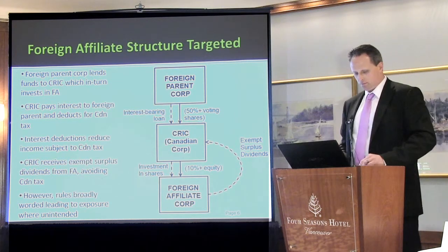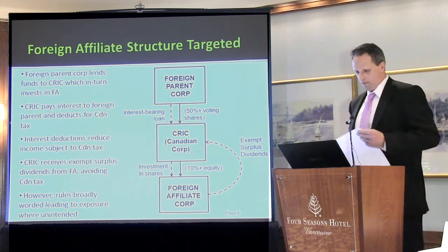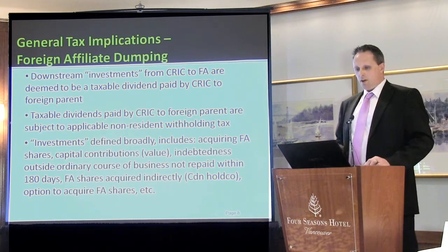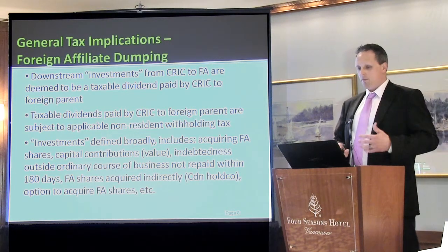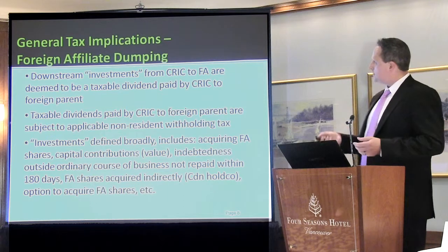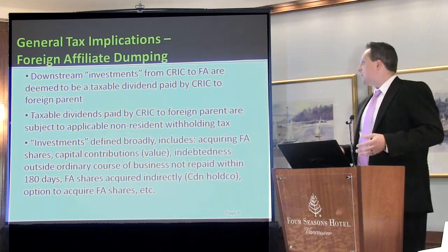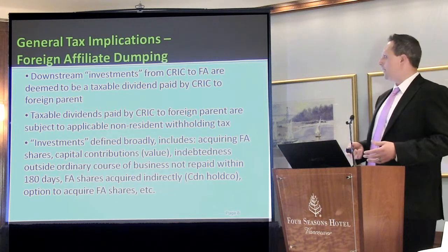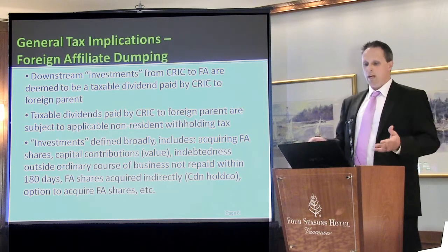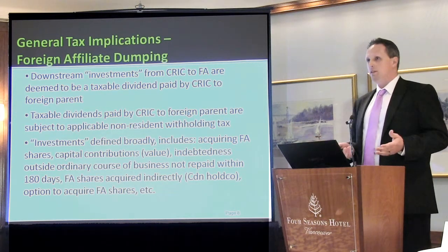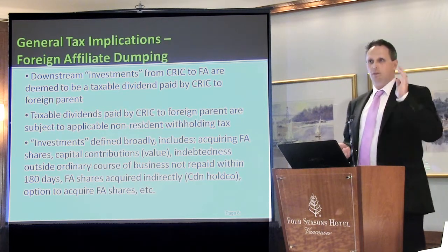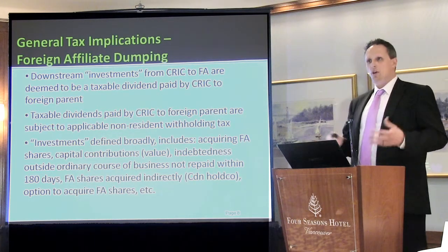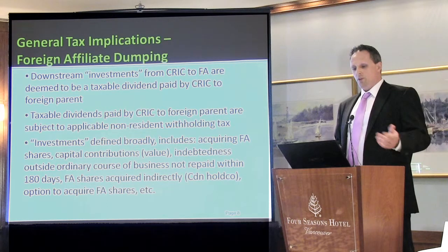Over time, there really isn't any tax being paid in Canada, yet money is still passing up to the foreign parent. That's where Finance had an issue with these structures, and they introduced these rules to try and prevent this from continuing. The implications are that a downstream investment from the Canadian company to the foreign affiliate is considered a deemed dividend to the foreign parent, subject to the normal withholding taxes on dividends. This liability is triggered immediately — even before any income has been generated — simply by investing down through the corporate chain.